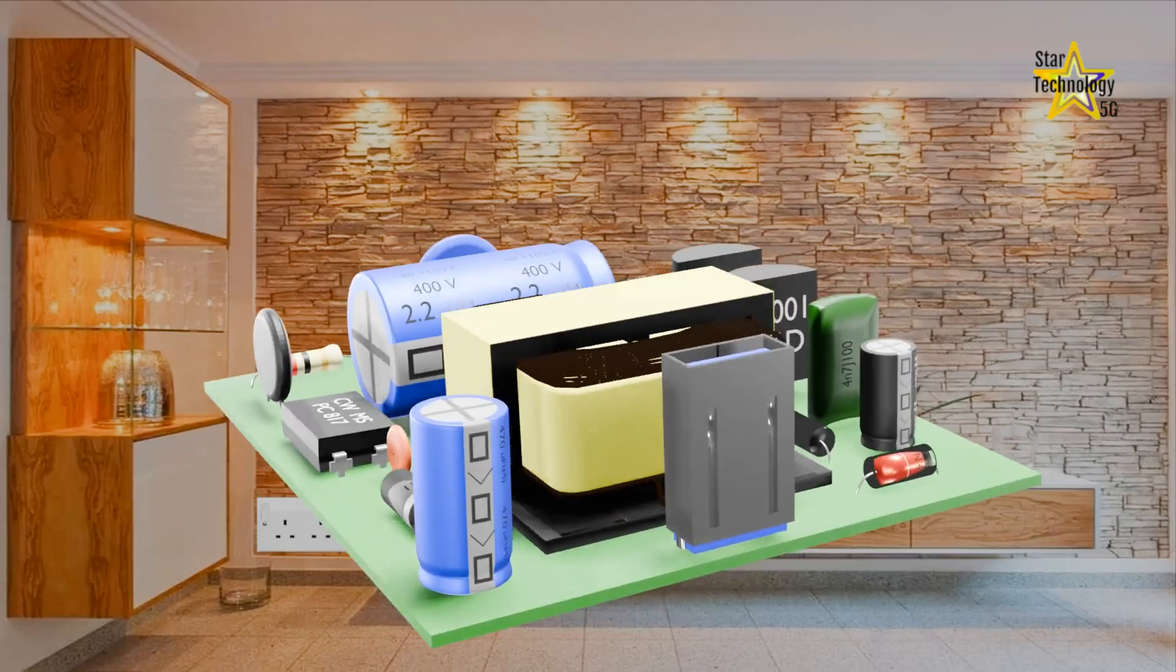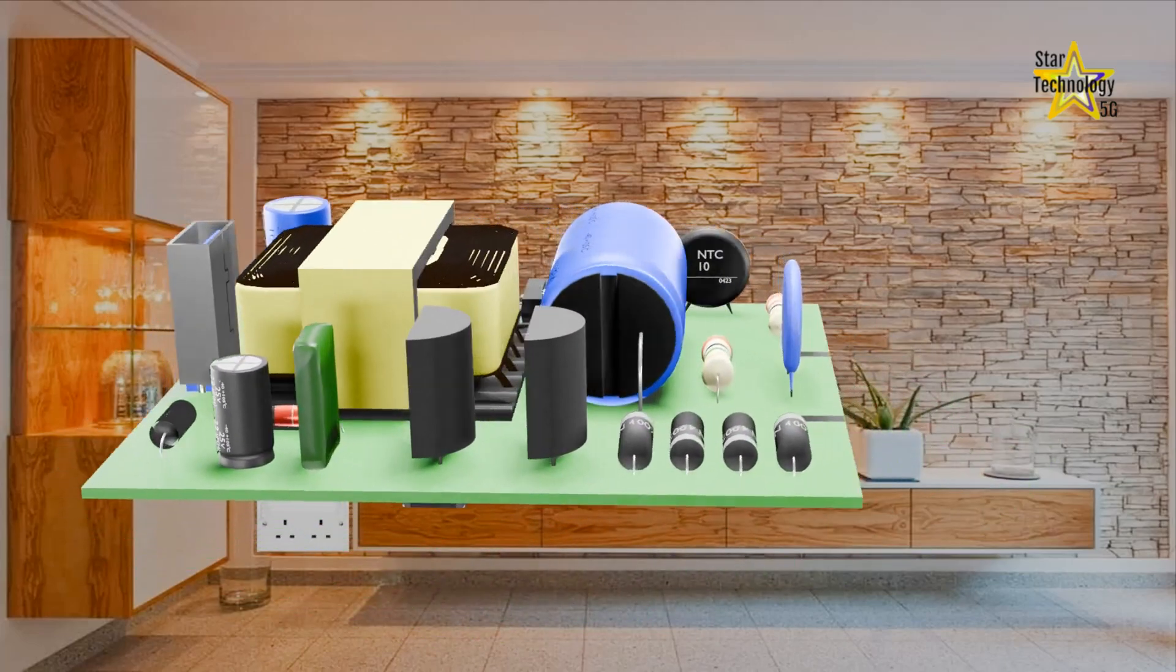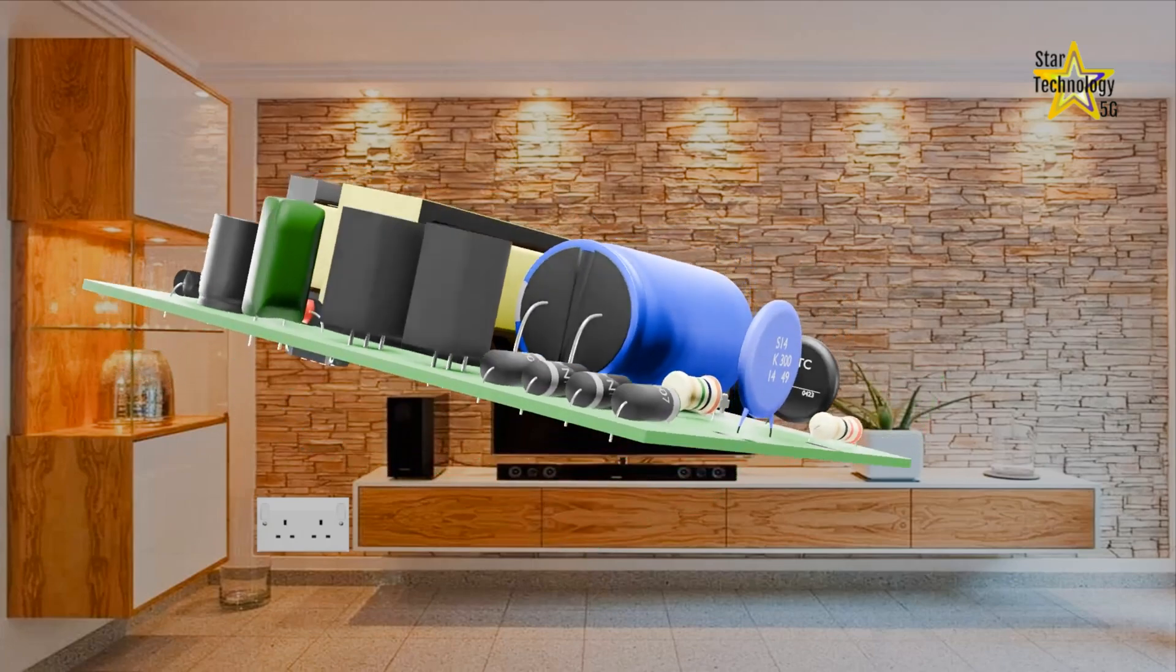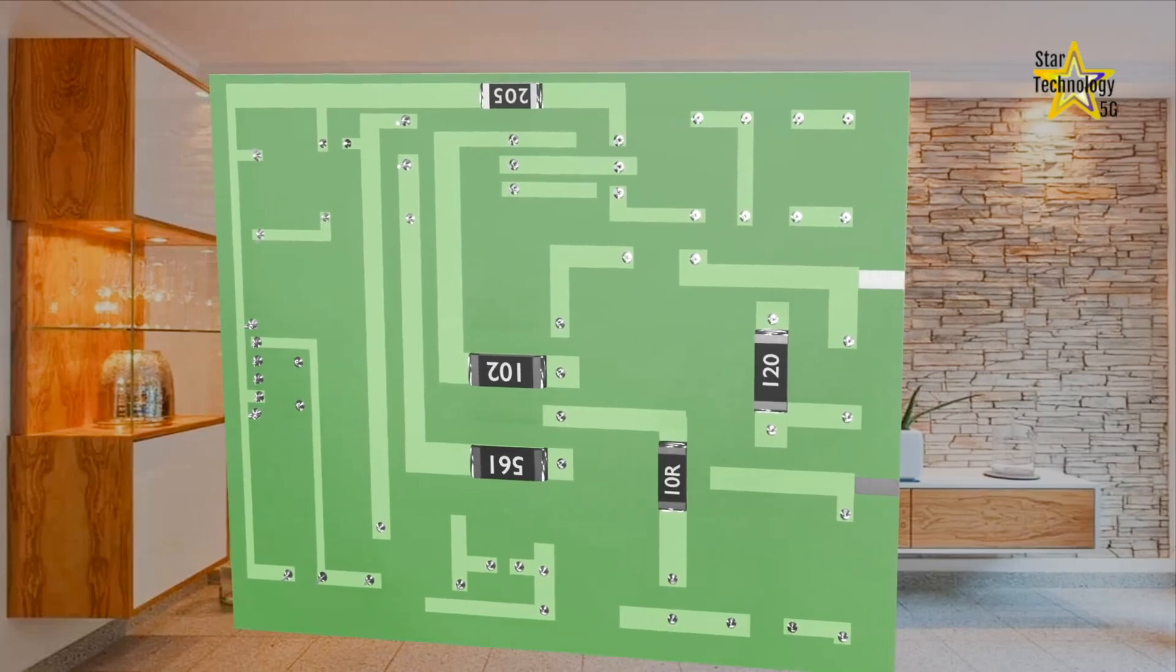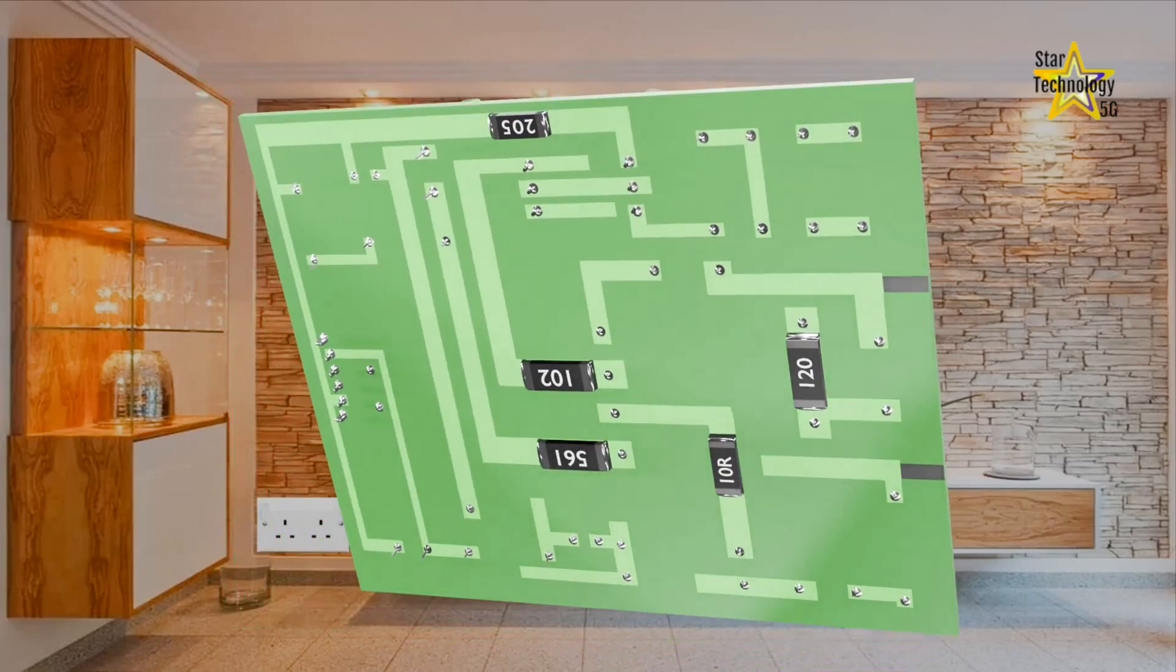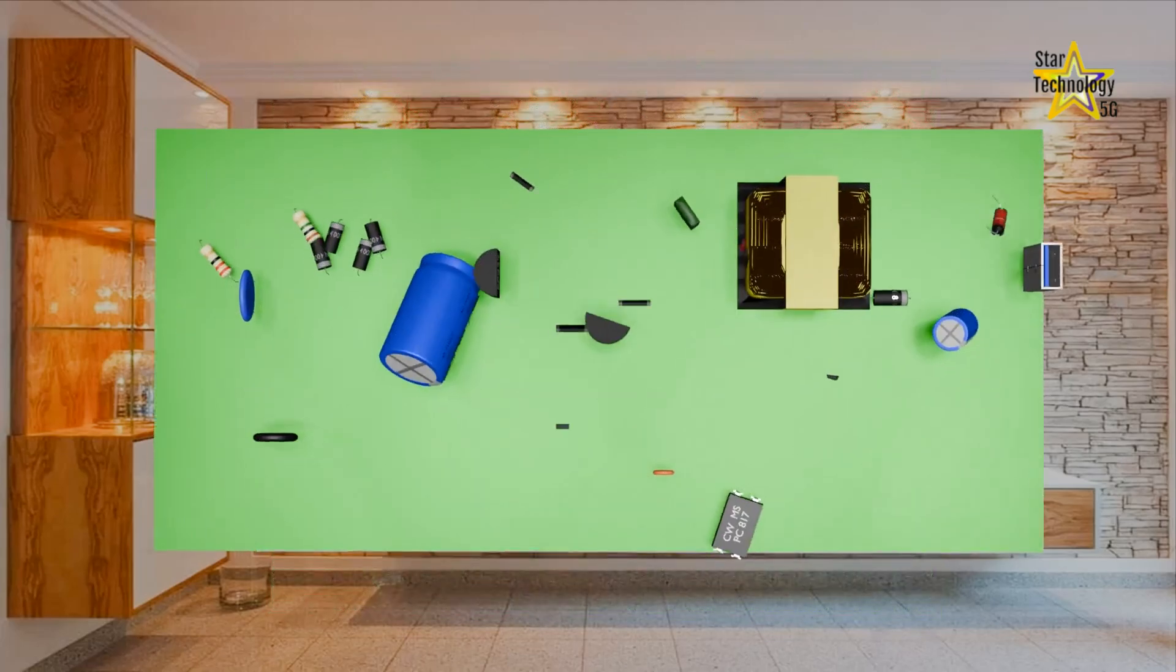There are diodes, capacitors, transistors, resistors, transformers, and an optocoupler. And there are SMD resistors below on the PCB. To better understand the circuit, let's rearrange the circuit.